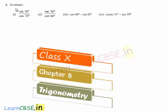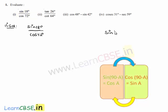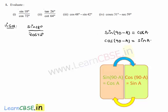Moving on to the first question: evaluate sin 18° divided by cos 72°. The given expression is sin 18 degrees by cos 72 degrees. Let us express both numerator and denominator in the same trigonometric ratio. We have sin(90° − a) = cos a and cos(90° − a) = sin a. By using these two identities, let us convert both into a single trigonometric ratio.